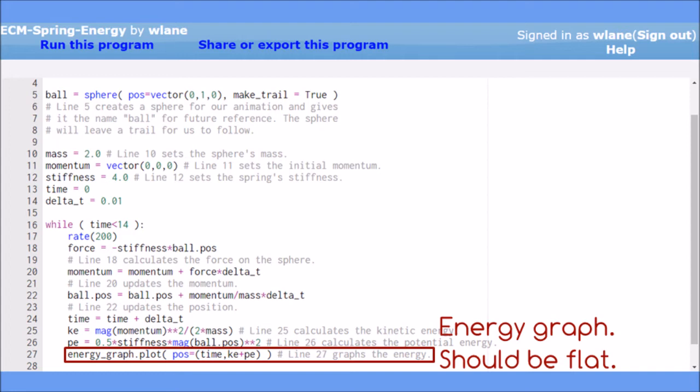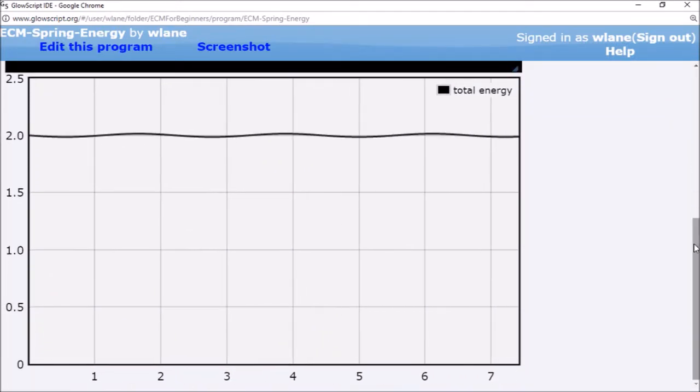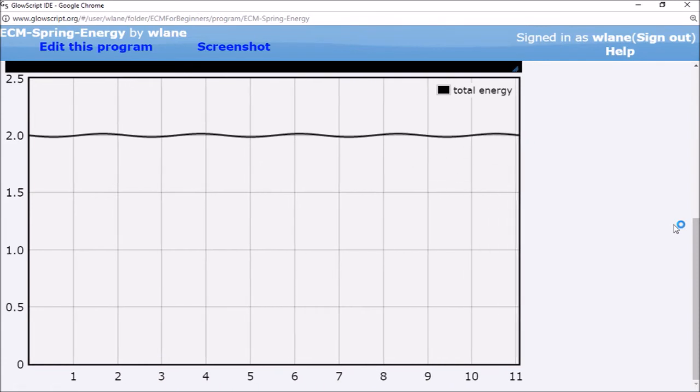If our simulation is accurate, this graph should give us a flat line. If we run the code, we see that we get a pretty constant value for the total energy. It oscillates a little bit, so it would be nice to improve this.